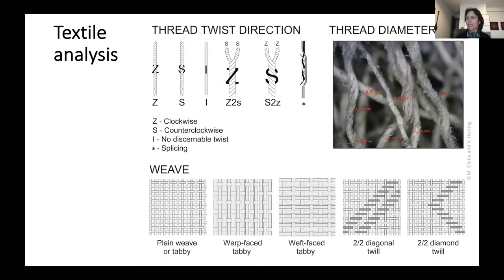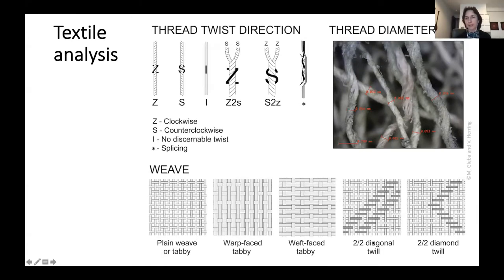We also have more complex types of weaves, though they're not as typical for Africa. These are called twills, where you skip over two weft or warp threads in any go on the loom. If you think of Scottish or North English production — heavy coat woolens — those would have been made in twill. They're denser and provide more insulation. So if we look at the textiles in Clarkson's chest, we have quite a variety of these different structures.